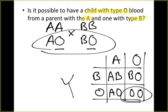So the answer is yes, we can get a child with type O blood from a parent that is A and another parent that is B. They just both have to have O as the recessive trait. So do you see how this works? I hope you do. If you have any questions, make sure you let me know.